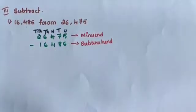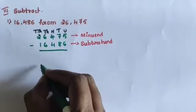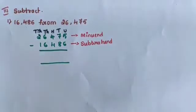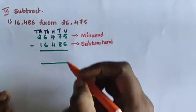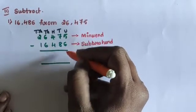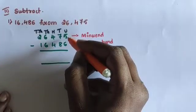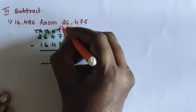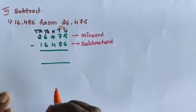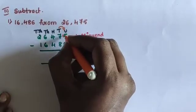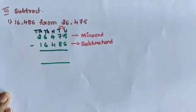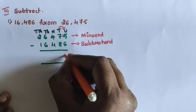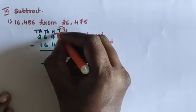First, subtract in the units place: 5 minus 6. Since 5 is less than 6, take a carry from the tens place. Make it 15. 15 minus 6 equals 9. Then the remaining digit in the tens place is 6.